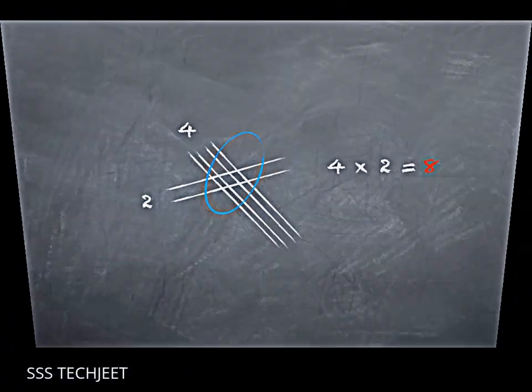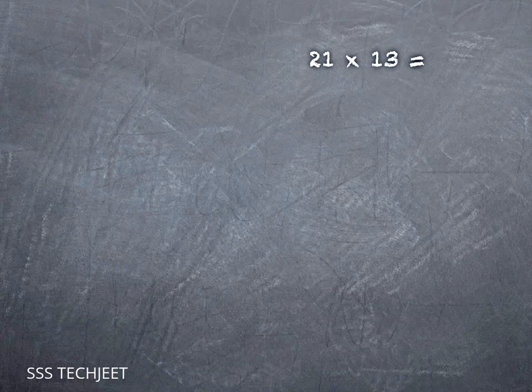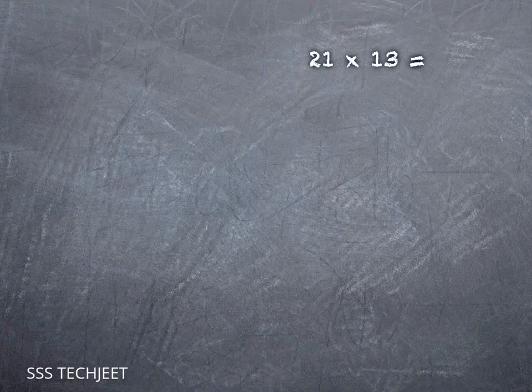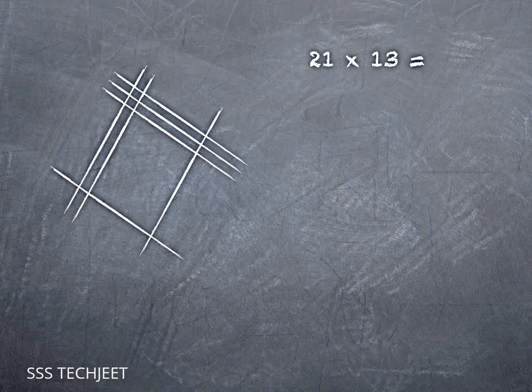When we move this into the context of a larger problem, you can see where it really helps if you don't know your facts. So I'll represent 21 with 2 sticks for the tens and 1 for the ones, and then 13 with 1 and then 3.